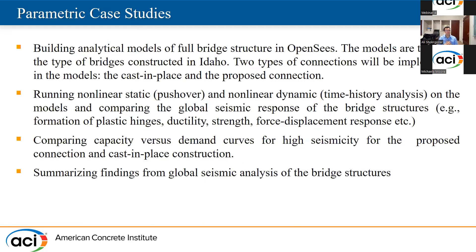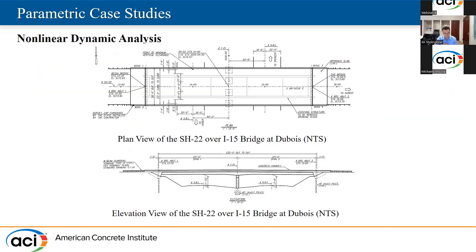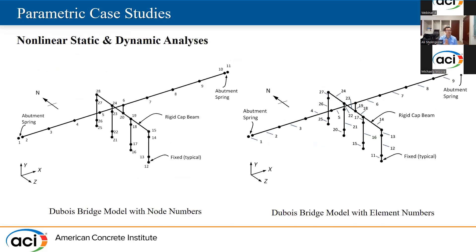Now that we know the computer model works, we went a step further. We decided to model a real bridge in Idaho in OpenSees with two different connections — one with cast-in-place connection and another with the proposed pipe connection. We ran two different analyses on the bridge: one was pushover and the other was dynamic or time-history analysis, and we compared them together. Here you can see the plan view as well as the elevation view of the real bridge in Du Bois, Idaho. This bridge has two spans and four piers, and here you can see the modeling in OpenSees with nodes and elements, including zero-length elements at the bottom of the piers.